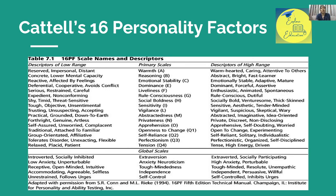The 16 primary factors include: warmth, reasoning, emotional stability, dominance, liveliness, rule consciousness, social boldness, sensitivity, vigilance, abstractedness, privateness, apprehension, openness to change, self-reliance, perfectionism, and tension. After that, Cattell also identified global scales — five broader factors: extraversion, anxiety, tough-mindedness, independence, and self-control.